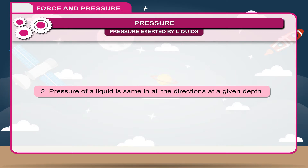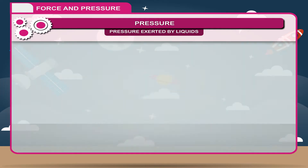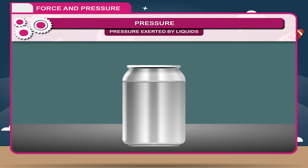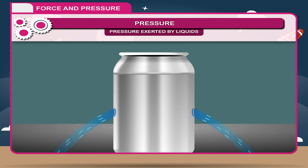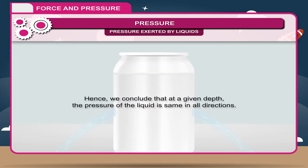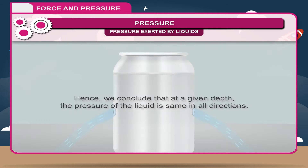2. Pressure of a liquid is the same in all directions at a given depth. Activity: Take a tin can, drill holes around it at the same depth, put water in it and open the holes. You will notice that water comes out from the holes with the same speed and falls at the same distance. This shows that at a given depth, the pressure of a liquid is the same in all directions.